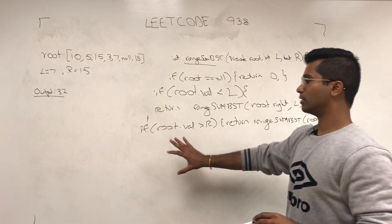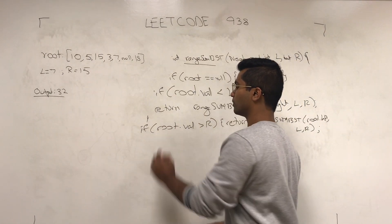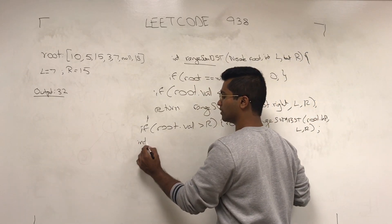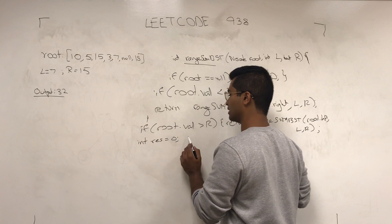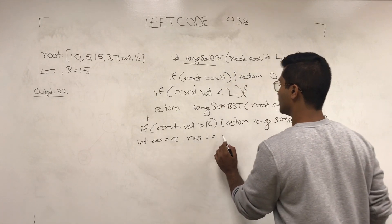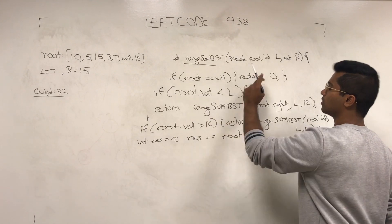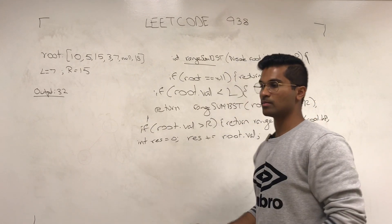Now that we took care of those, what we're going to do is initialize a variable, because the integer is the return type, integer res, and then res is going to be incremented by root.val. We already made sure that root is not null. So we have to increment that, and then the rest is simple.